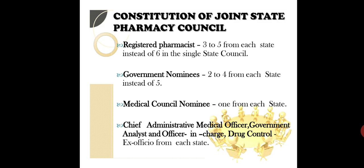Government nominees are 2 to 4 from each state, instead of 5. The medical council nominee is 1 from each state. The chief administrative medical officer, government analyst, officer in charge, and drug controller are ex-officio members from each state — all these members are appointed to form a joint state pharmacy council.